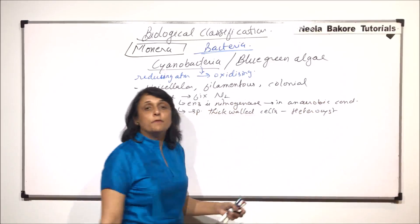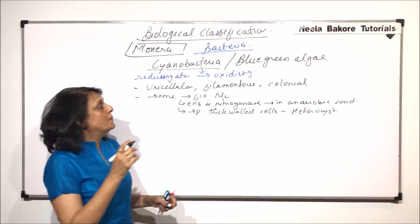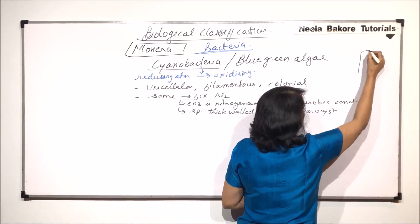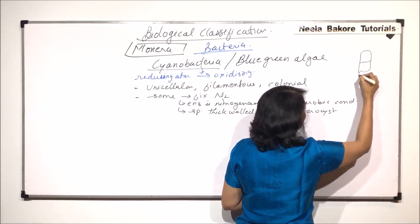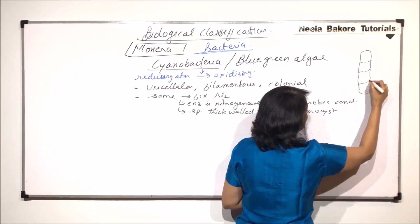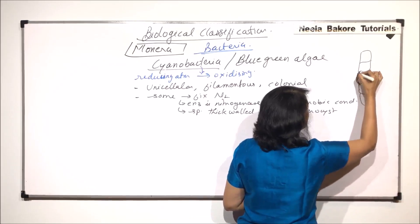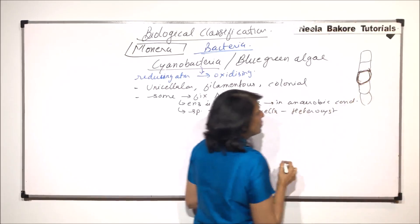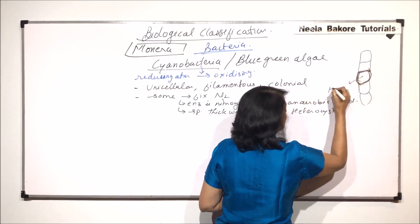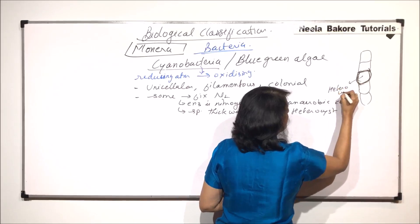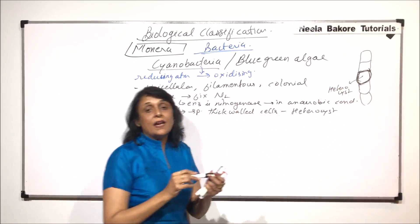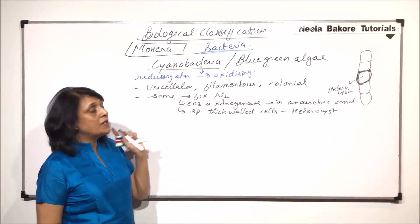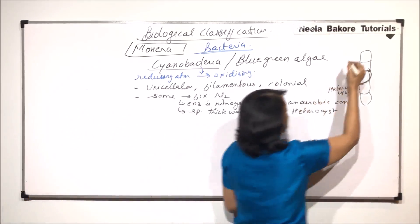If we draw a filament, say we are talking about Nostoc. Here these are the cells and this is a filamentous structure and we would find that some cells, they are thick-walled and they are known as the heterocysts. This is the heterocyst and here nitrogen fixation would take place. Some other filamentous form, this is Nostoc that we are talking about.